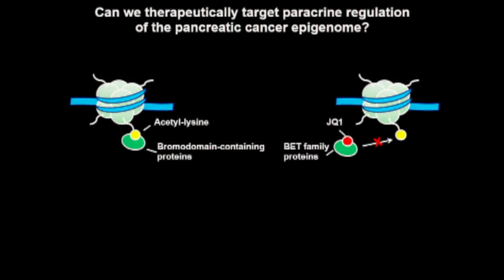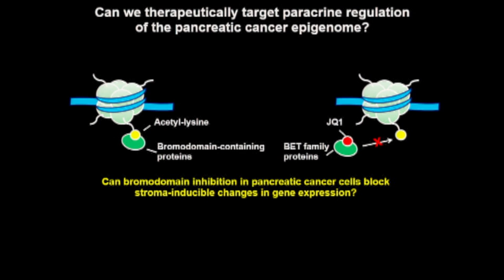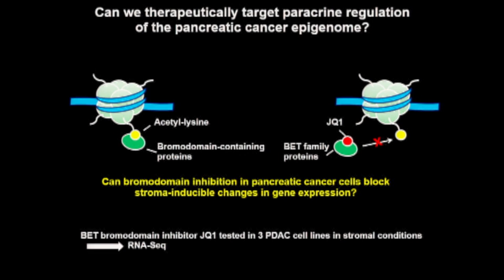I asked whether bromodomain inhibition can block stroma-inducible changes in gene expression. Using the BET bromodomain inhibitor JQ1 in my three KRAS mutant pancreatic cancer cell lines under stromal conditions and measuring gene expression by RNA-seq, I found that JQ1 induces negative regulation of stroma-inducible genes. These gene sets showed a statistically significant inverse correlation between genes upregulated by stromal signals and downregulated by JQ1, including genes in anabolic pathways that overlap with the RAS signature discussed earlier.